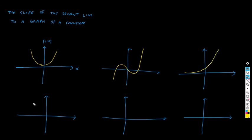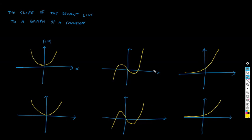I'm going to draw them in here again — the same functions. So we have six functions, or three that are repeated twice. And what I'm going to do next is, for each of the three upper ones, I'm going to draw secant lines for each of these functions — secant lines to the graphs of these three functions.